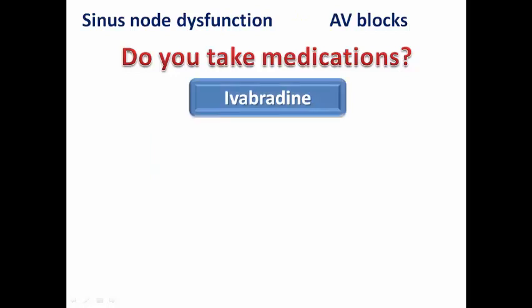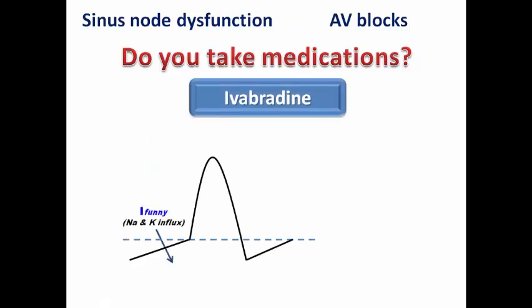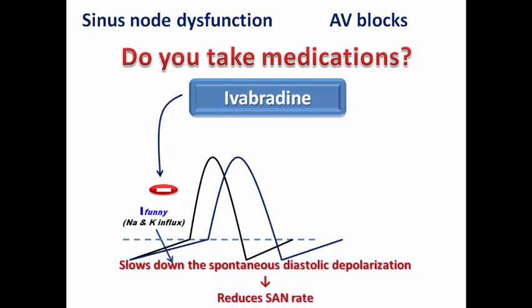Let's see the mechanism of ivabradine. We have the funny channels responsible for sodium and potassium influx, resulting in the slow spontaneous diastolic depolarization in the SA node, which allows the resting potential to reach the threshold level and start an action potential. Ivabradine inhibits these channels, slowing down the spontaneous diastolic depolarization and reducing the SA nodal firing rate, thereby reducing heart rate.